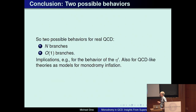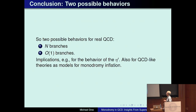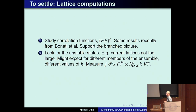To conclude: there are two possible behaviors that are interesting to consider for real QCD — either N branches or order one branches. This has implications for the behavior of the eta prime, and also for applications of QCD-like theories in situations like monodromy inflation. To settle this, I think what's required are lattice computations.